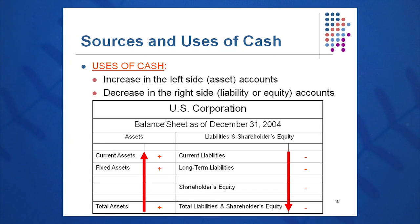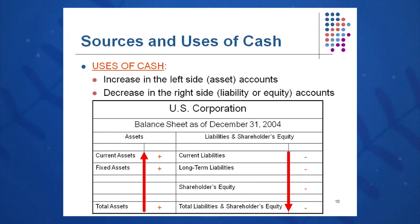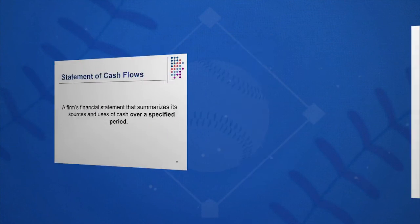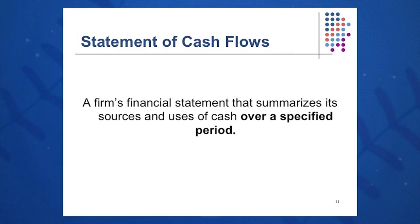Uses of cash are exactly the opposite. If a left-side balance sheet item goes up — say we buy some inventory — that's a use of cash. So left-side balance sheet item up, right-side balance sheet item down — those are uses of cash. That's an easy way to remember it by looking at the balance sheet. So, what is a statement of cash flows?